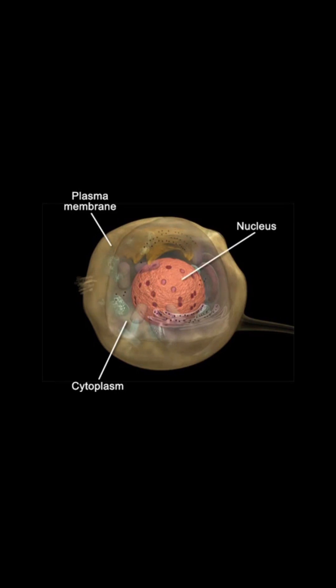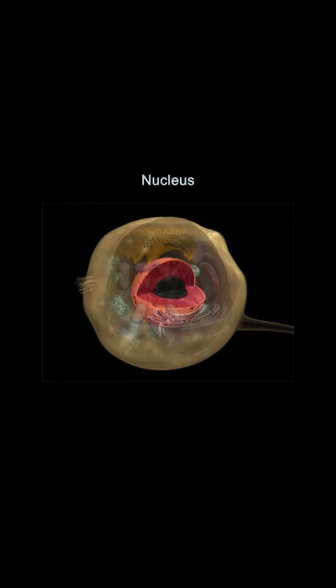It is the information in the nucleus that ultimately controls the workings of the entire cell. Within the nucleus is the nucleolus, which plays an essential role in the formation of ribosomes.